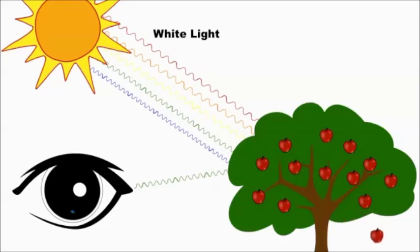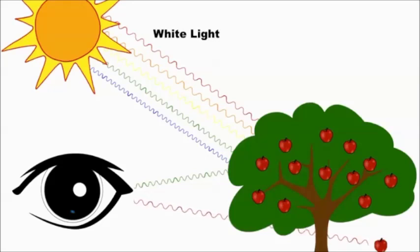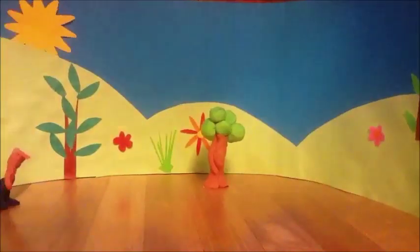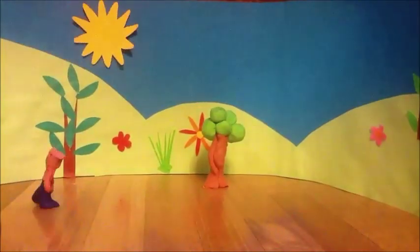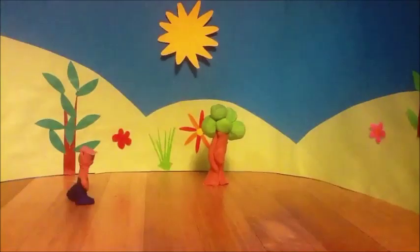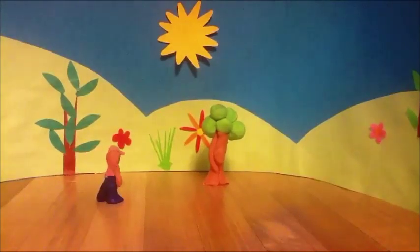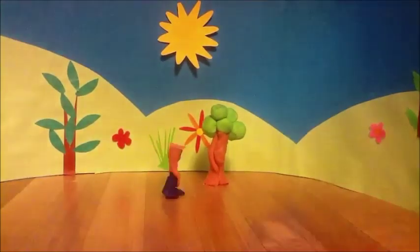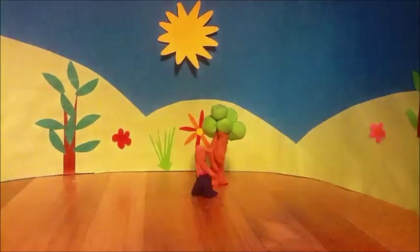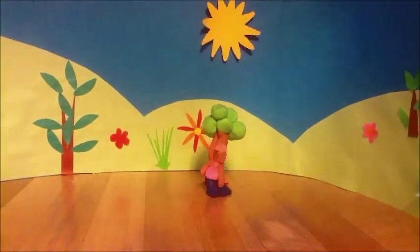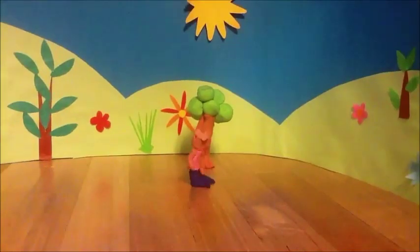With the red apple, it is the red colour waves that bounce back. When we walk past trees in the day, our eyes see that they are green. This is because white light from the sun has green colour waves in it.